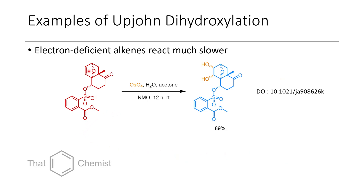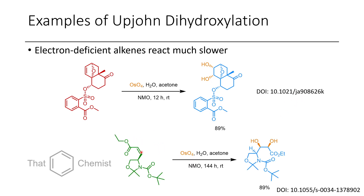One interesting example is the treatment of a dihydrofuran-containing sulfonate, which is converted to the dihydroxy product. They use this obscure sulfonate as a leaving group and subsequently substitute it with lithium bromide — an uncommon leaving group used in total synthesis. In another case, an alpha-beta unsaturated ester, which is a Michael acceptor and electron-deficient alkene, reacts much slower. The first electron-neutral substrate took only 12 hours for dihydroxylation, whereas this electron-deficient alkene took 144 hours — 12 times longer — though similar yields were obtained.